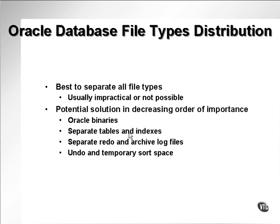Always separate data files which contain tables and indexes because they're accessed more or less at the same time — specifically in an OLTP database when you're running single rows or small range searches using indexes to access tables with row IDs, or even in data warehouses where you've got lots of sorting that uses large composite indexes. Separate redo and archive log files both from each other and from other files in the database.